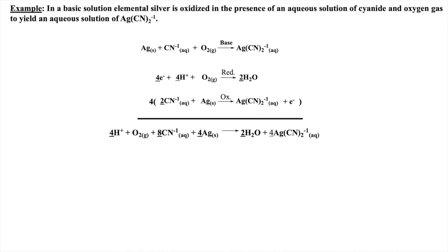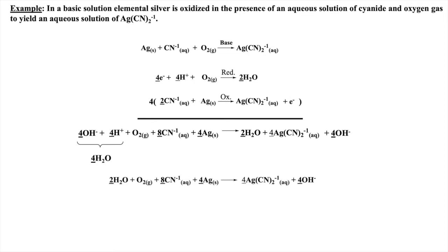Up to this point, all the steps have been the same as if I were in acid. However, we are in base, so we now need to add hydroxyl groups to neutralize the protons present. In this example, there are four protons on the reactant side. Thus, I must add four hydroxyls to the reactant side. But remember, if I add four to the reactant side, I must add four to the product side. At this point, I have formed four water molecules on the reactant side, which may require simplification — in other words, canceling out water molecules. Finally, a check for numbers of atoms and charges is completed on our balanced equation.